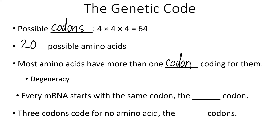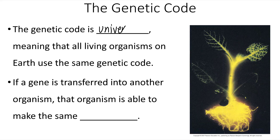Every mRNA molecule starts with the start codon — that is where translation begins — and ends at one of the three stop codons. The genetic code is universal, meaning all living organisms on Earth use the same genetic code. It's not that they all have the same DNA sequence, but how that DNA is translated and how those RNA molecules are interpreted to become proteins is the same. If a gene is transferred into another organism, that organism is able to make the same protein.